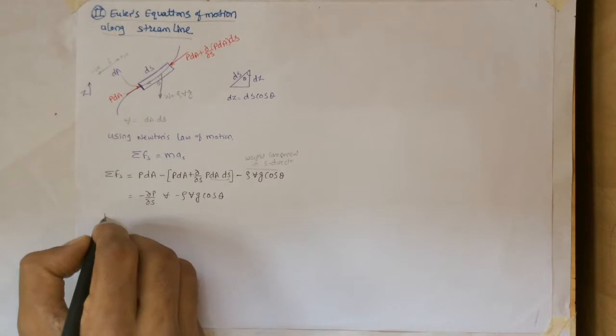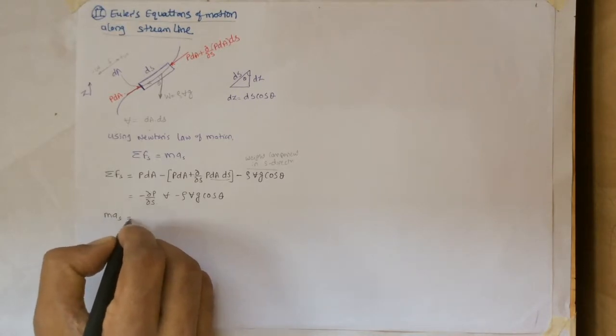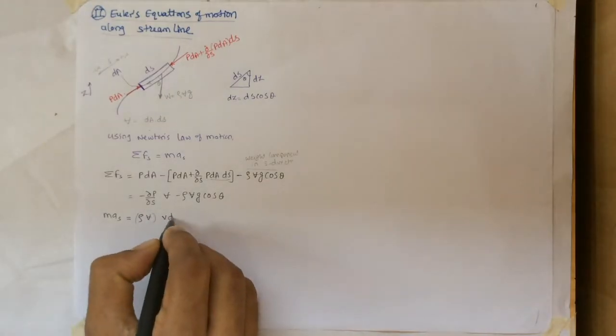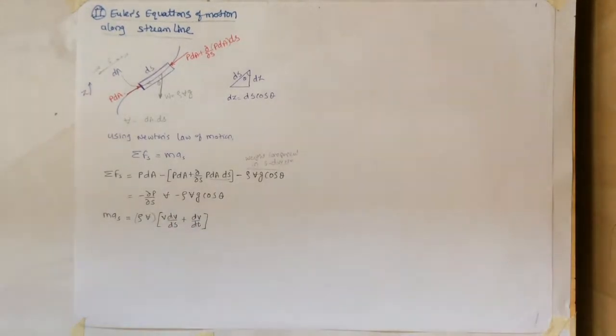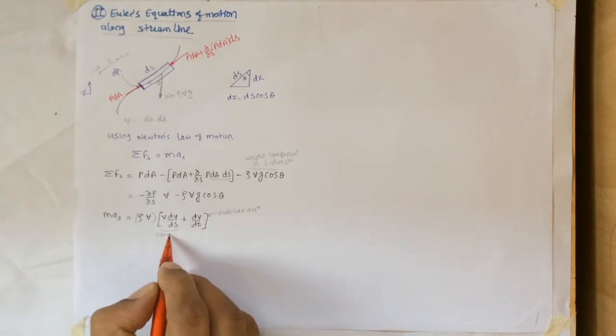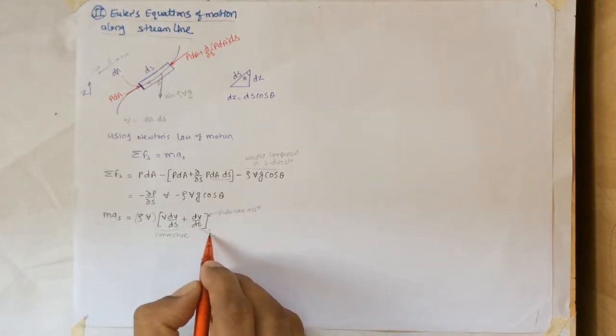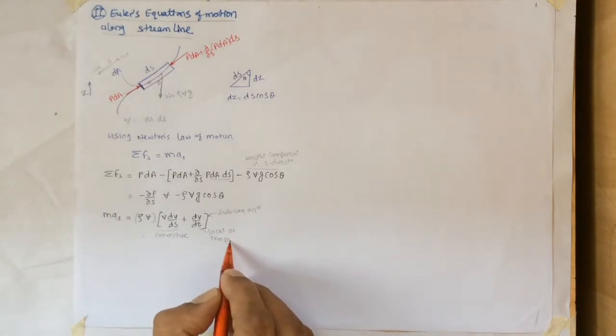Right hand side of the equation we can write ma equals to rho times volume which is mass times v dV/ds plus dV/dt which is acceleration. In Eulerian approach v dV/ds is convective acceleration plus dV/dt is local or temporal acceleration.